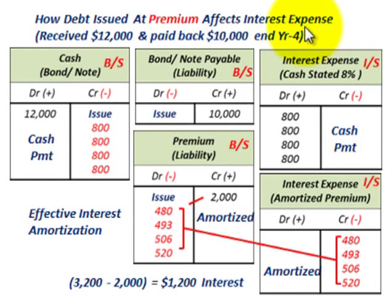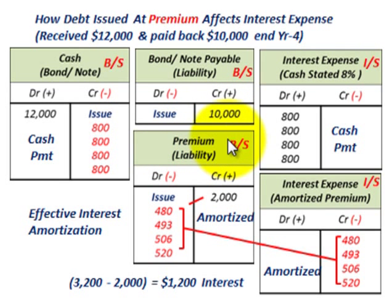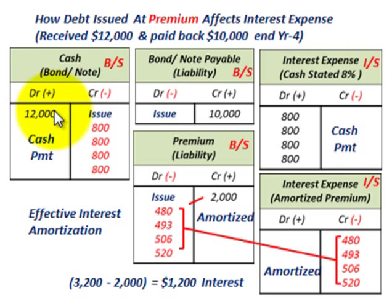This note was issued at a premium — we received $12,000 and will pay back $10,000 at the end of year 4. We set up a liability on our balance sheet: a bonds or notes payable credited for $10,000. On the asset side, we received $12,000 in cash. We need a balancing entry on our liability side — a premium on bonds payable credited for $2,000. So we have a $10,000 credit, a $2,000 credit, and the $12,000 cash debit. Credits balance with debits.